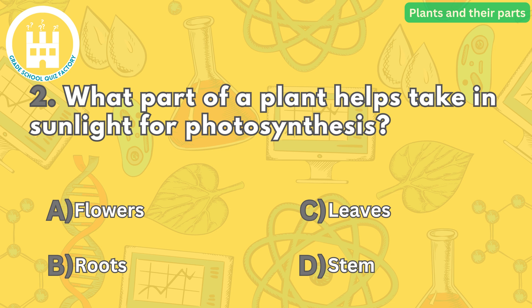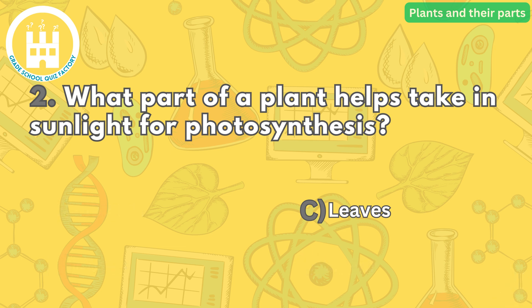Question number two: what part of a plant helps take in sunlight for photosynthesis? The correct answer is letter C. Leaves are the part of a plant that captures sunlight and uses it to produce food through photosynthesis. They are usually flat and thin to maximize the absorption of sunlight.